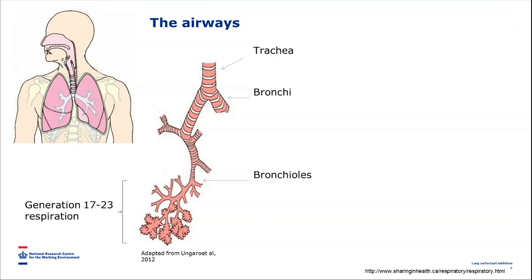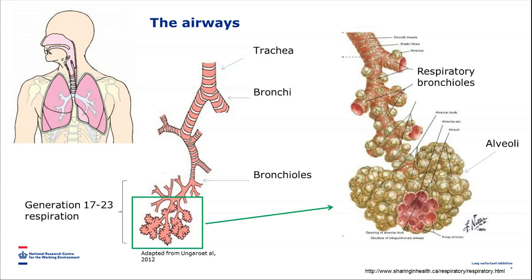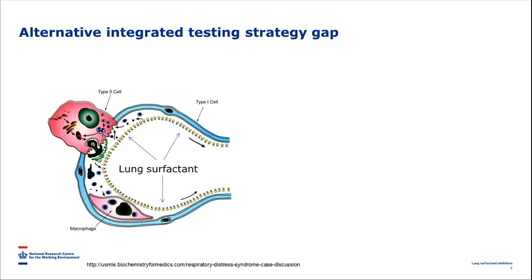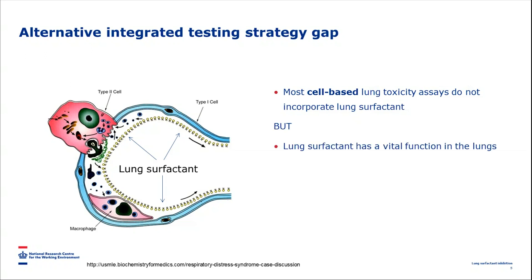The airways branch, and the further down you go, the smaller the diameter becomes. From the 17th to the 23rd generation of branching we have the respiratory part of the lungs, and this is the area we are trying to model with our in vitro method. The respiratory part consists of the respiratory bronchioles and the alveoli, which are covered by a thin liquid called lung surfactant. Most cell-based lung toxicity assays do not incorporate lung surfactant, yet lung surfactant has a vital function.